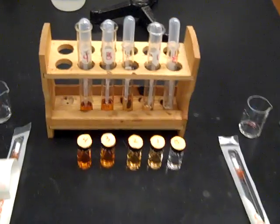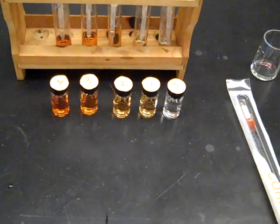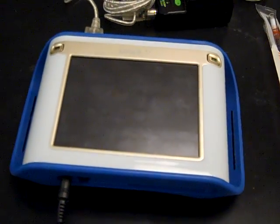We have the test tube rack with five test tubes in it. We have five cuvettes which we would be using in our colorimeter, and that is attached to the spark.